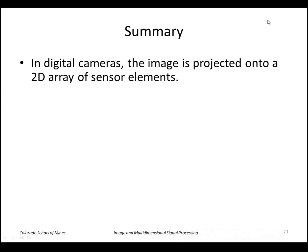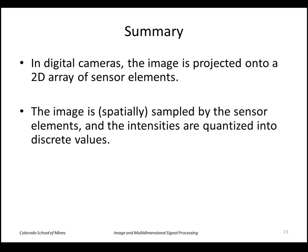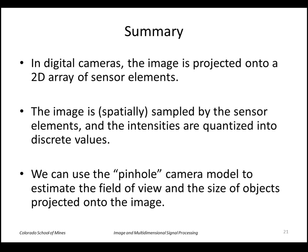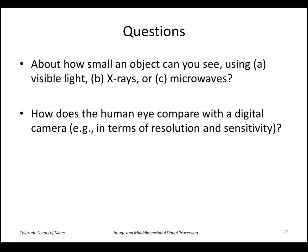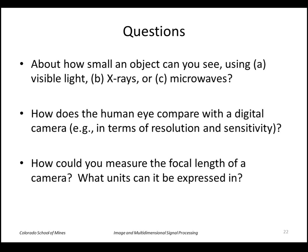In summary: in digital cameras the image is projected onto a two-dimensional array of sensor elements; the image is spatially sampled by those sensor elements and the intensities are quantized into discrete values; and we can use the pinhole camera model to estimate the field of view and the size of objects projected onto the image. Some review questions: How small an object can you see using visible light, X-rays, or microwaves? How does the human eye compare with a digital camera in terms of resolution and sensitivity? And how could you measure the focal length of a camera, and what units can it be expressed in?